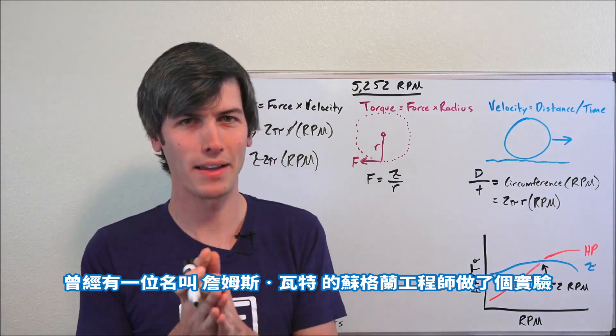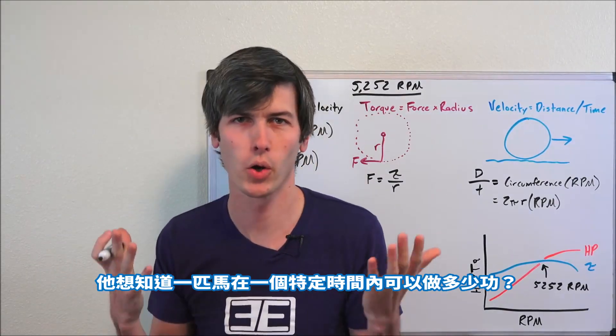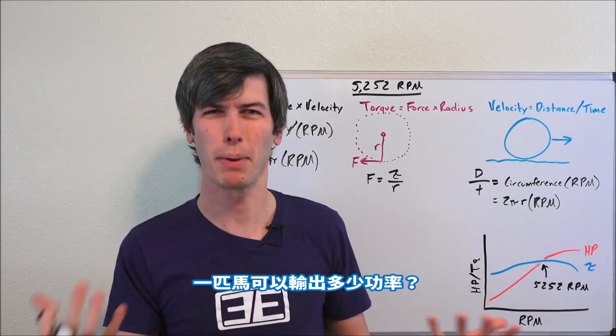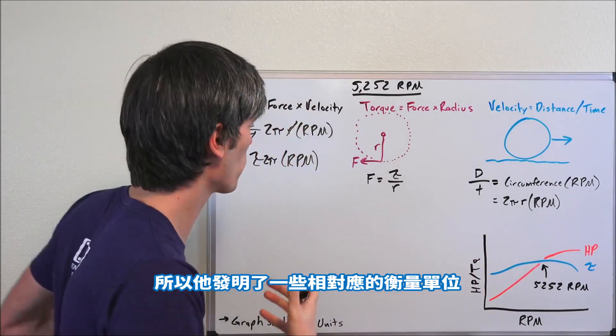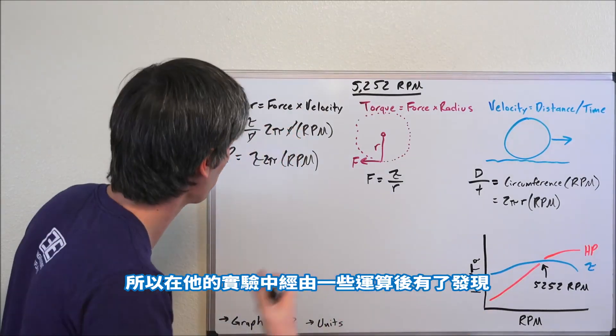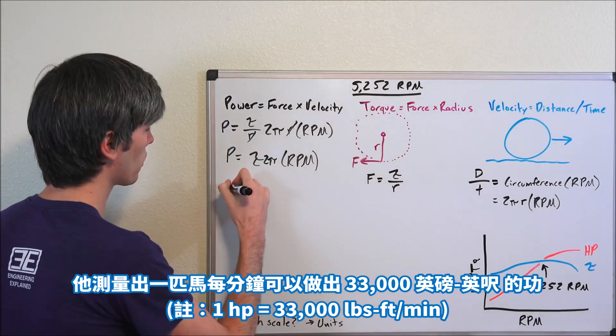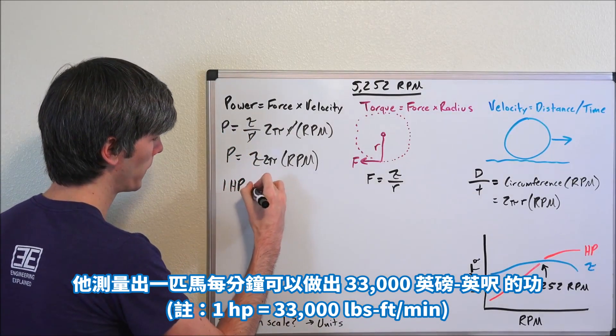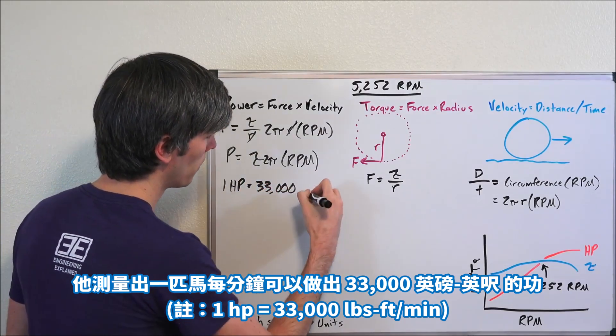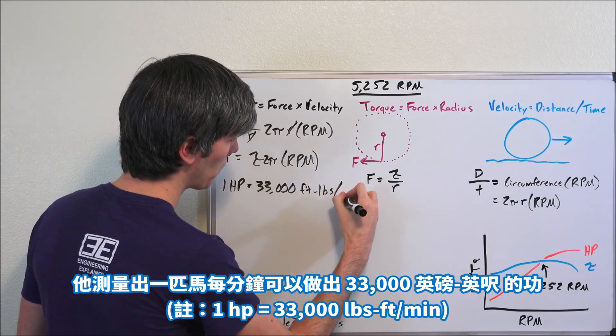Now a Scottish engineer by the name of James Watt did a little experiment. He wanted to know how much work a horse could do in a certain amount of time, how much power a horse made. So in his experimentations and discovery and math, he decided that one horsepower could do 33,000 foot-pounds of work per minute.